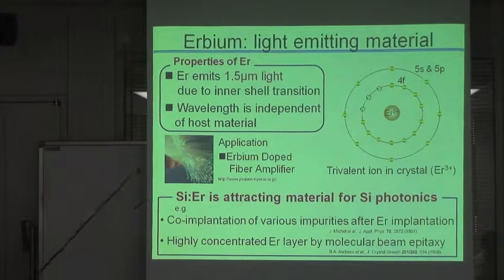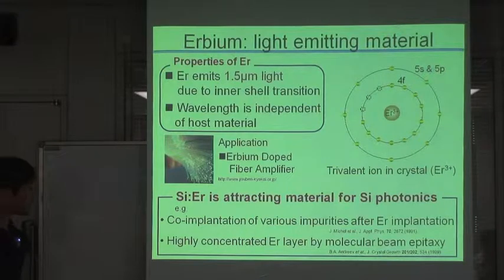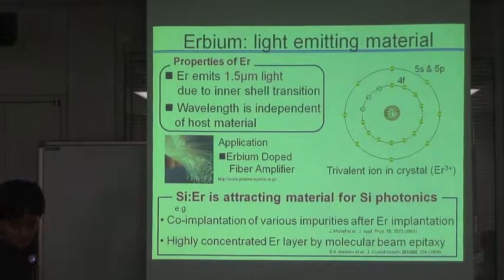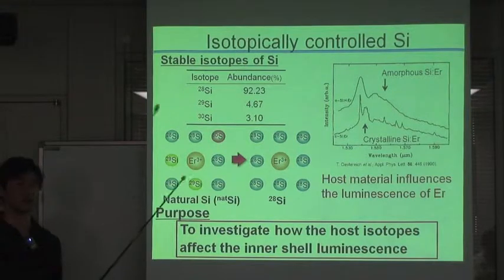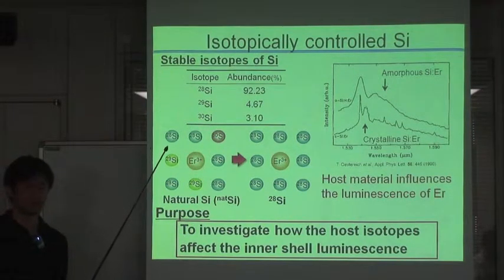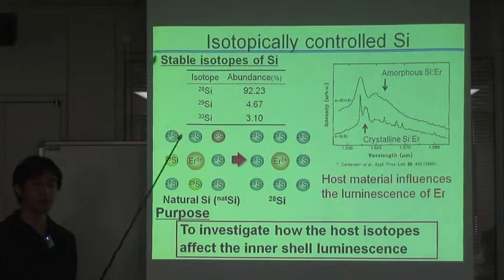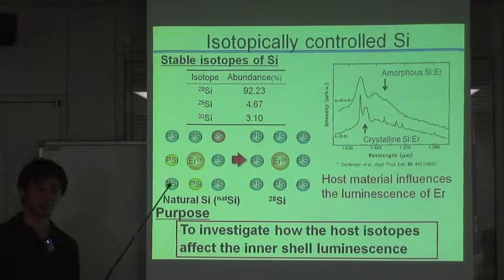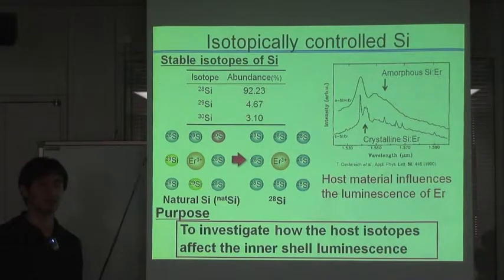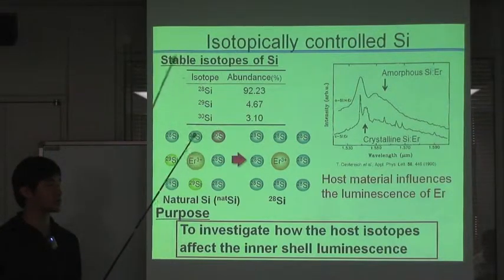So far, research has focused on enhancing the luminescence efficiency, such as by co-implantation of various impurities after Erbium implantation or the fabrication of highly concentrated Erbium layers by molecular beam epitaxy. In this study, we focus on the microscopic structure of Erbium in silicon rather than the luminescence of Erbium in silicon. This approach is very important because very little is known on the microscopic structure of Erbium in silicon. One reason is that Erbium in silicon forms a variety of optically active luminescence centers.